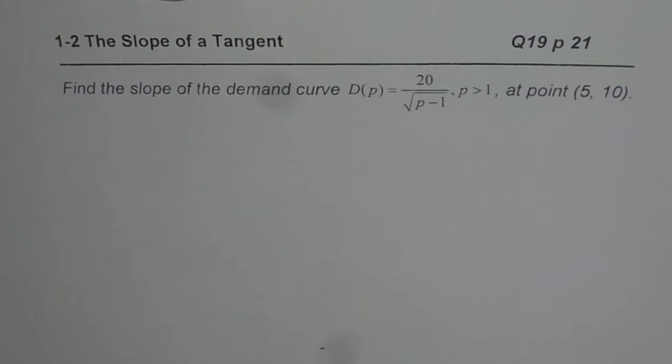Question is, find the slope of the demand curve D(P) equals 20 divided by square root of P minus 1, where P is greater than 1, at point (5, 10).